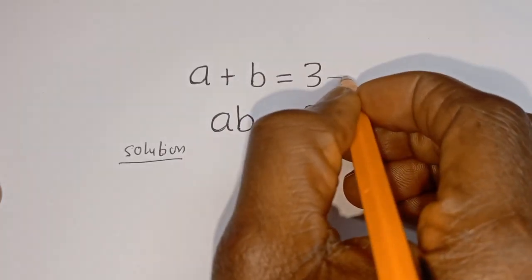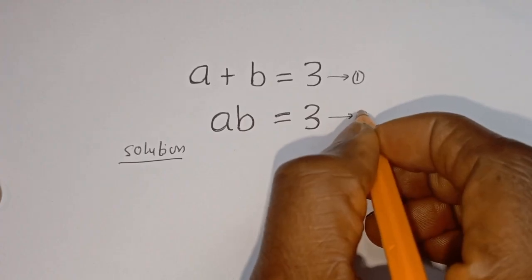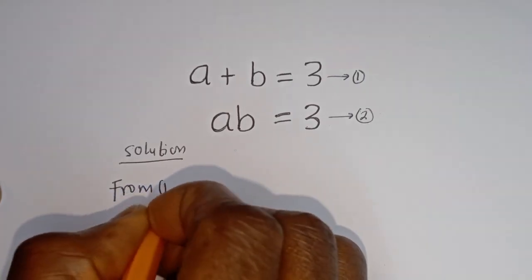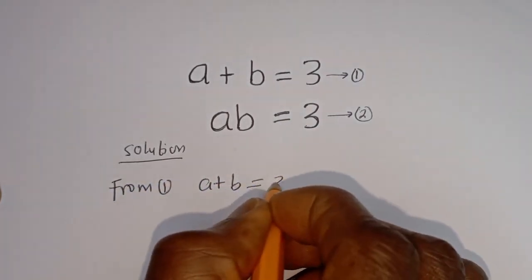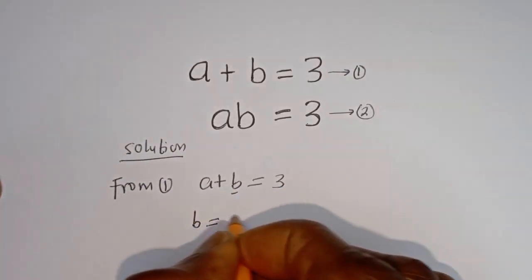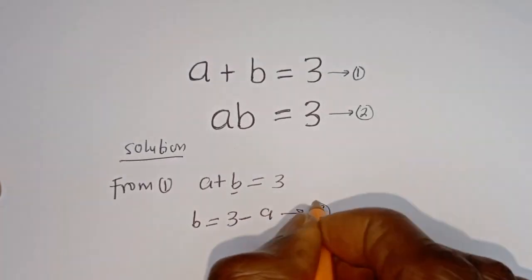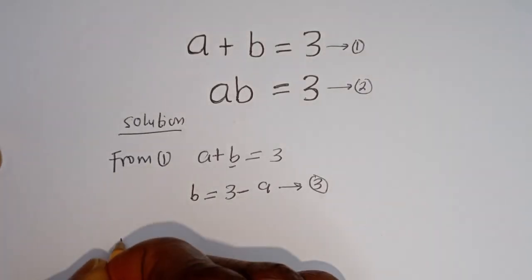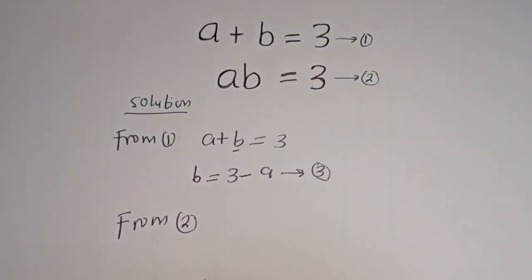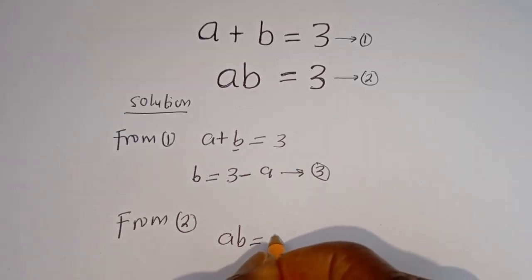A plus B is equal to 3 — let's call this equation 1. A times B is equal to 3 — let's call this equation 2. Then from equation 1, A plus B is equal to 3. Let's make B the subject of the formula: B is equal to 3 minus A. Let's call this equation 3. Then from equation 2, A times B is equal to 3.